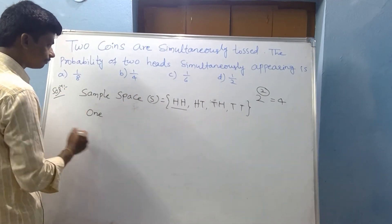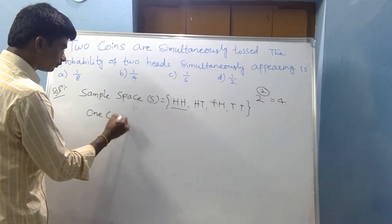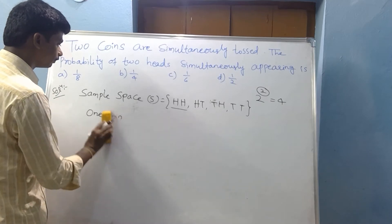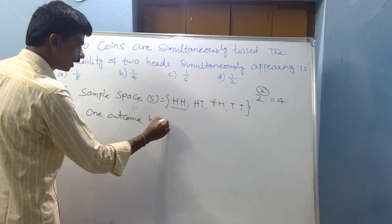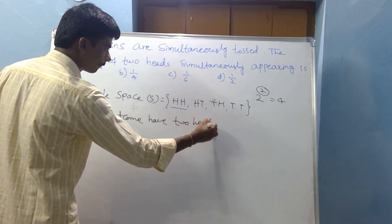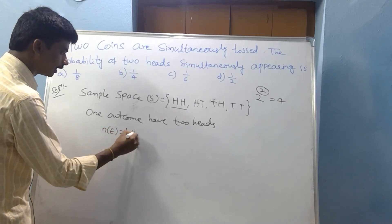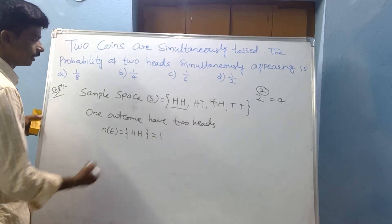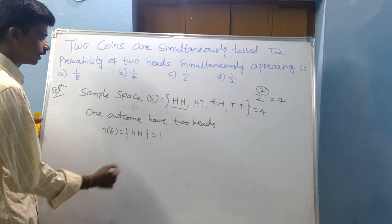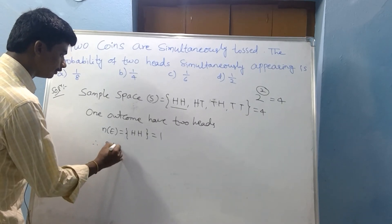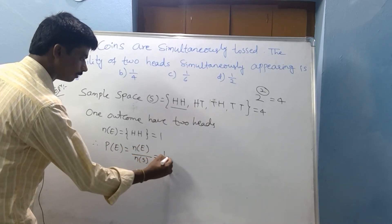Only one outcome has two heads. Number of favorable outcomes E = Head-Head = 1. Sample space equals 4. Therefore, probability of E = number of E by number of S = 1 by 4.